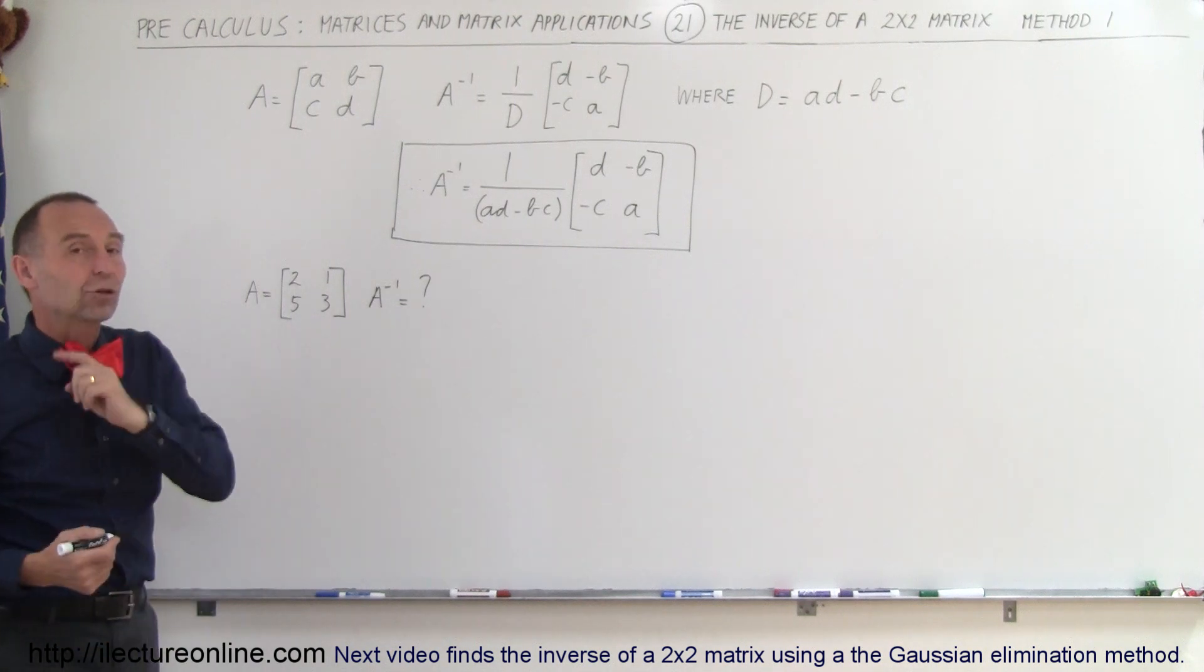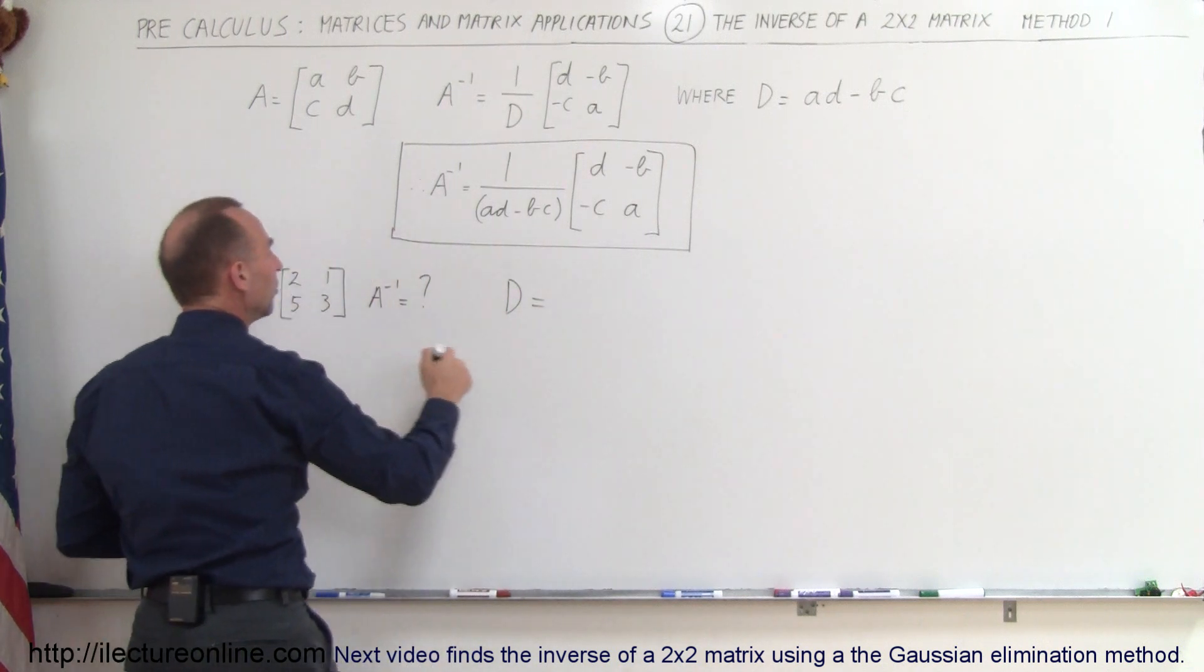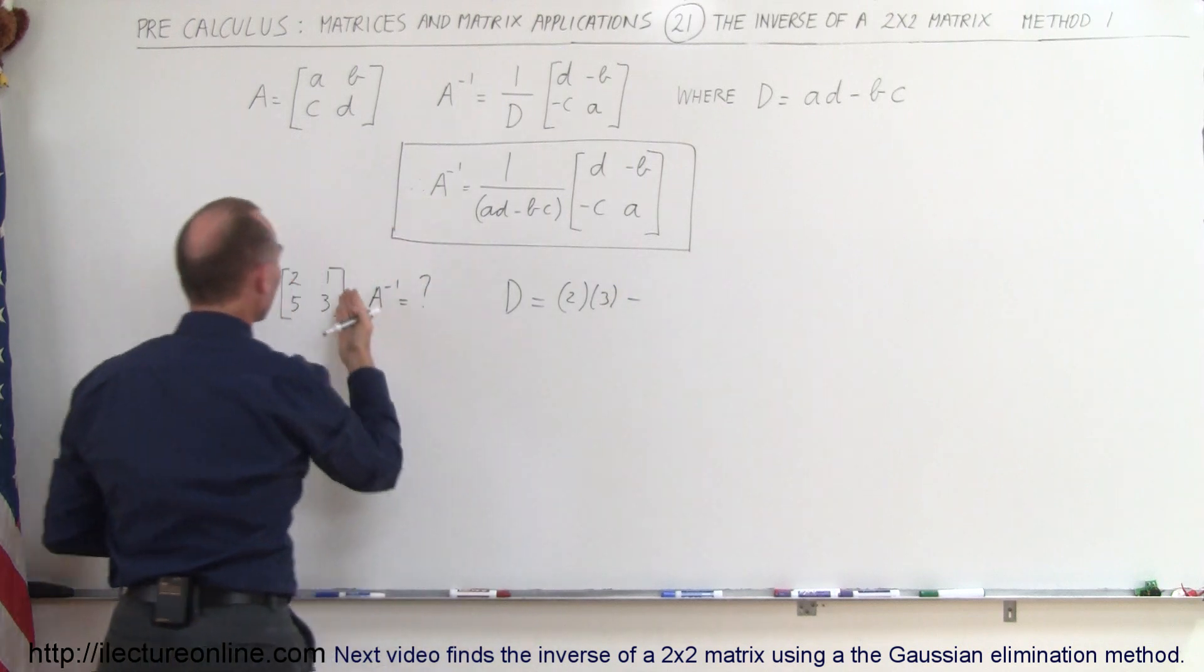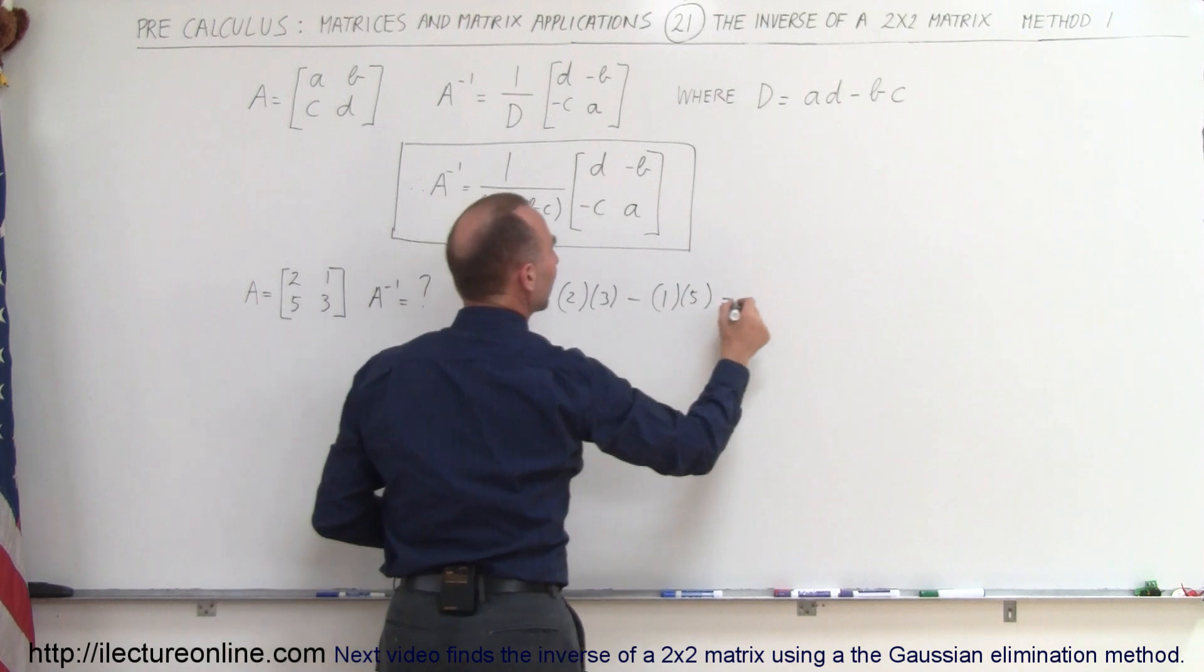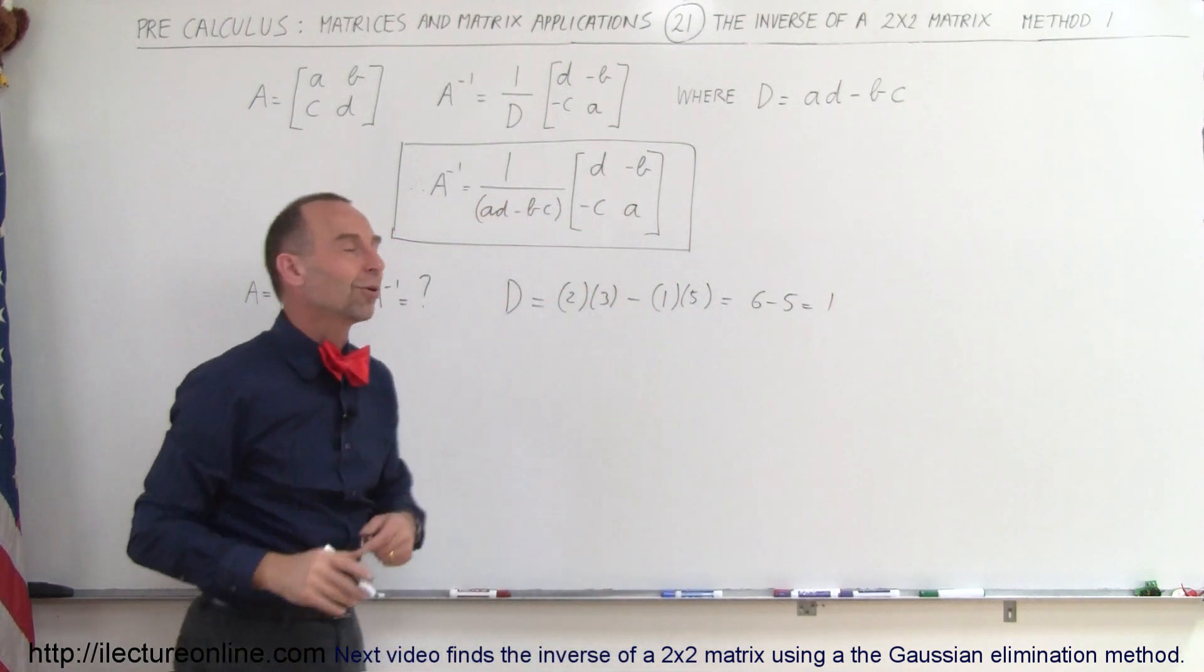Well, first of all, let's find the determinant. The determinant is equal to the product of these two elements, which is 2 times 3, minus the product of those two elements, which is 1 times 5. So in this case, that would be 6 minus 5, which is 1. That makes it easy. The determinant is 1.